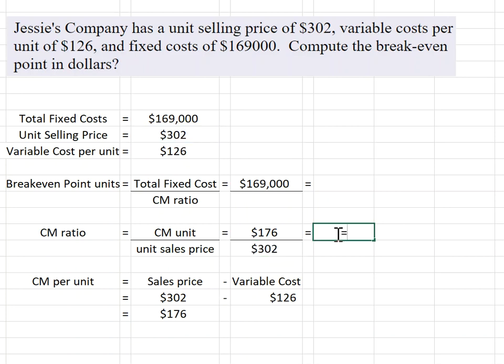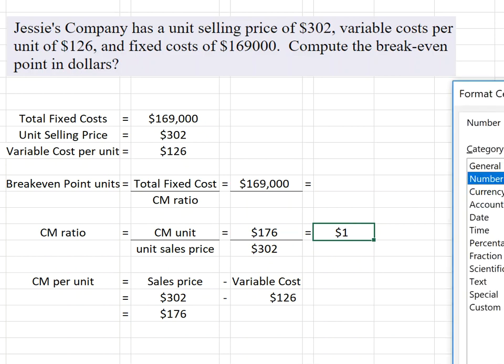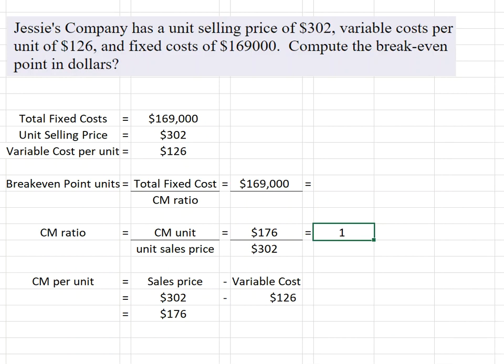That tells me my contribution margin ratio is... it's not a dollar. Let's fix that. This gives us $0.583.